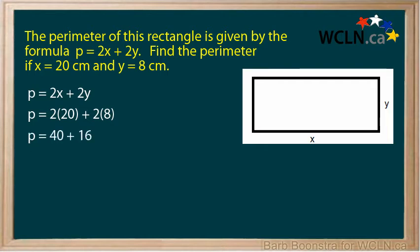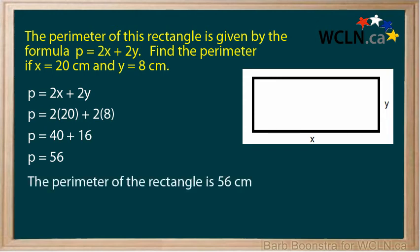Step 3: Do the calculations. 2 times 20 is 40, and 2 times 8 is 16. So P equals 56. The perimeter of the rectangle is 56 centimeters.